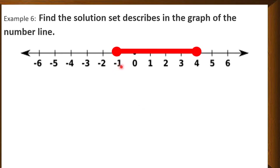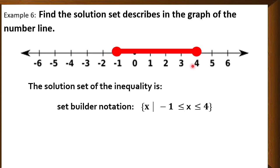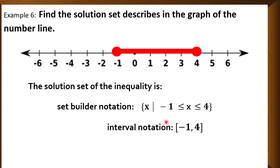Another example: we have a solid circle at negative 1 and a solid circle at 4. The solution set is from negative 1 up to positive 4. In set builder notation, that is the set of all x such that x is less than or equal to 4 but greater than or equal to negative 1. For the interval notation, we use a bracket sign because negative 1 is part of the solution, and a bracket also at positive 4 because 4 is part of the solution.